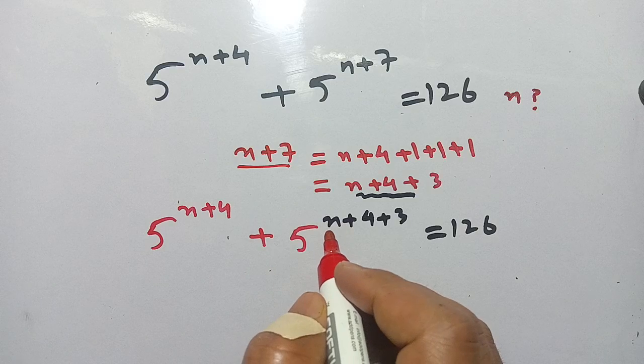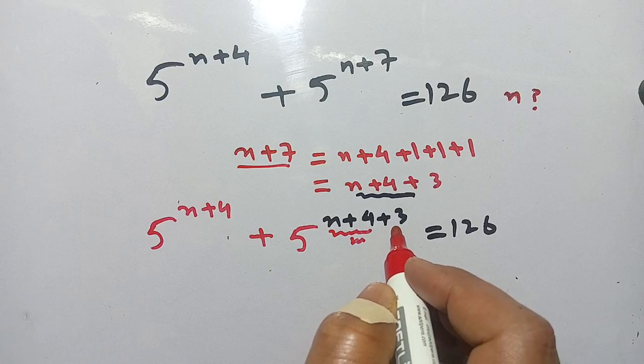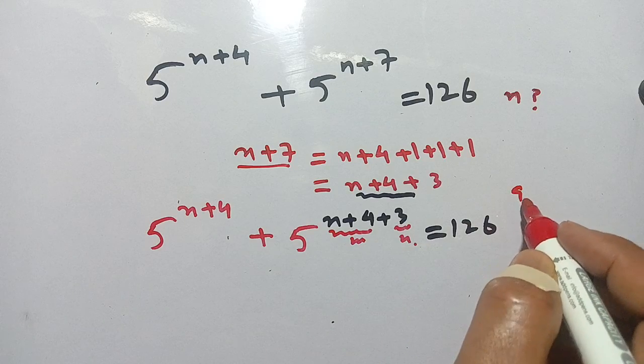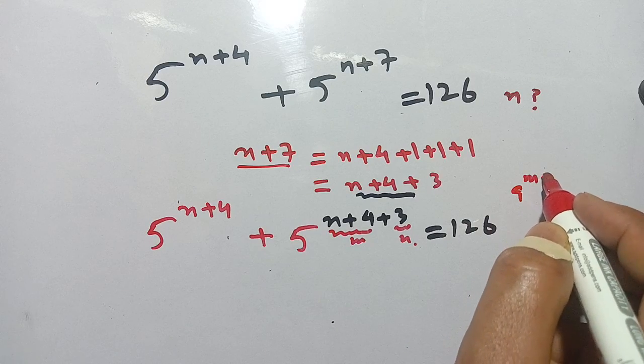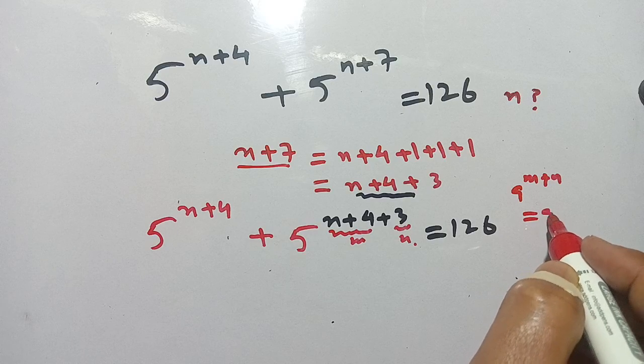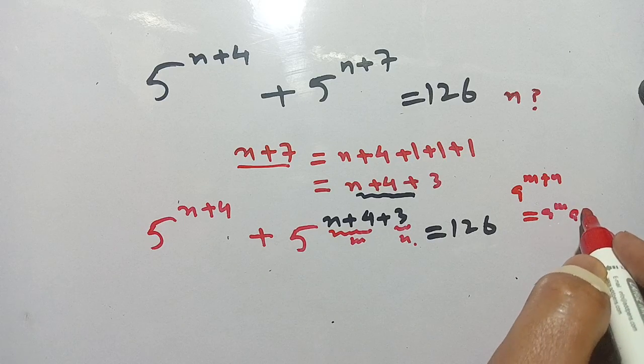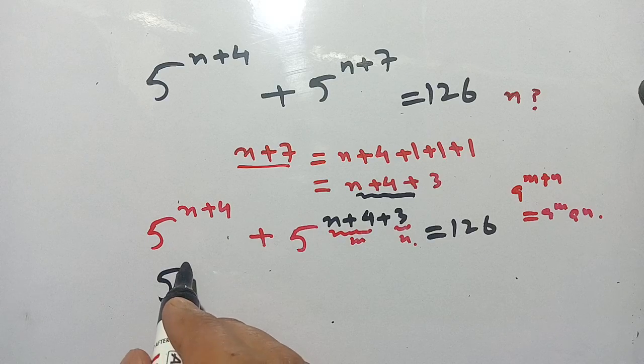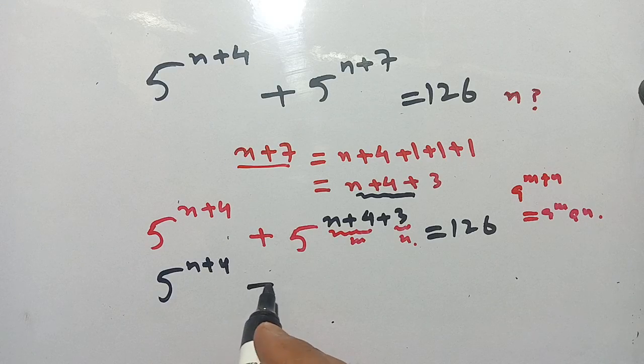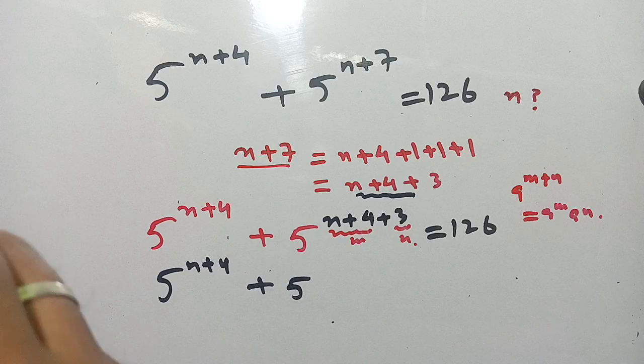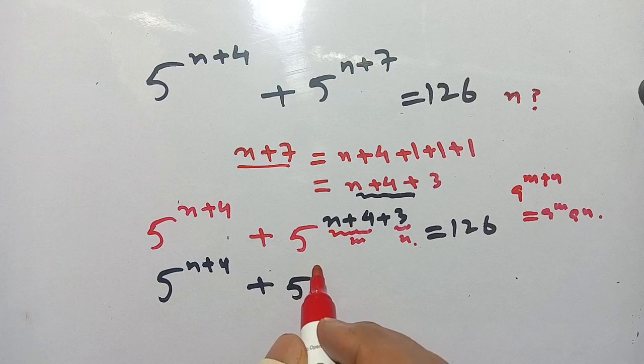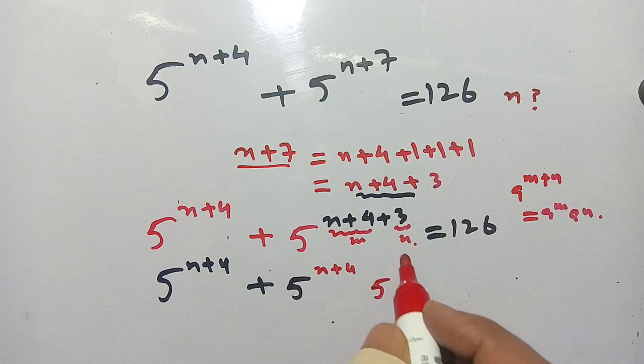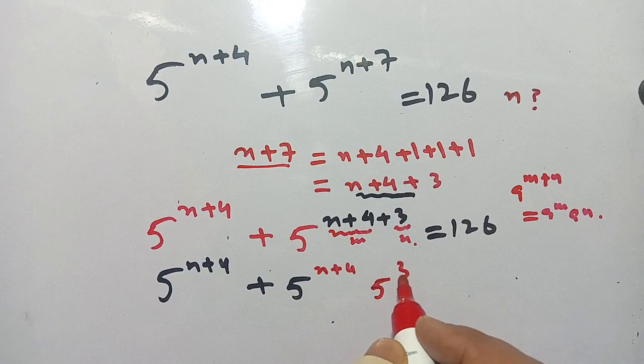Now suppose that n plus 4 is m and 3 is n. We apply here a power m plus n, then it is equal to a power m times a power n. Now we have 5 power n plus 4 plus 5 power n plus 4 times 5 power 3.